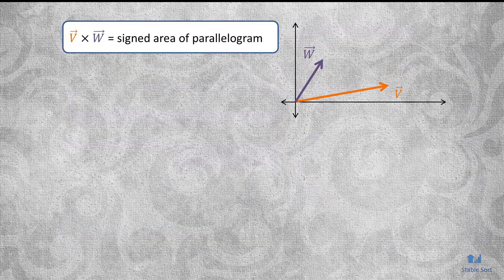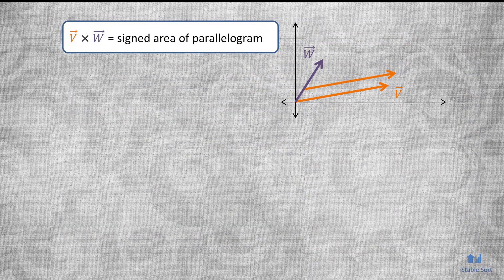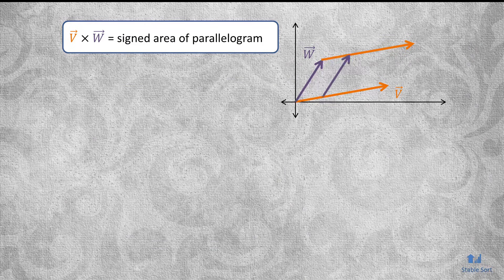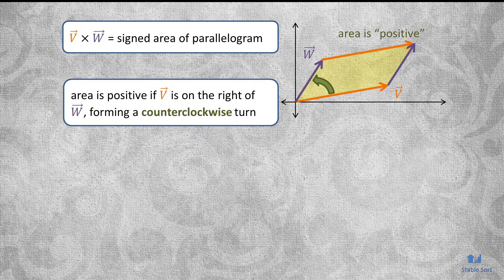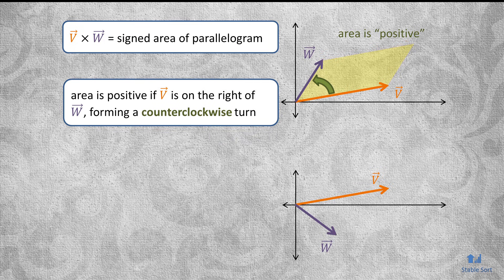If you don't recall, the cross product of two vectors V and W calculates the signed area of the parallelogram that is formed if you connect the two vectors like so. If V is on the right of W, then the cross product ends up positive. But if V is on the left of W, then it's negative.